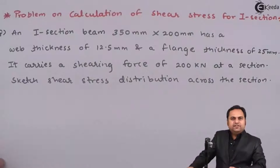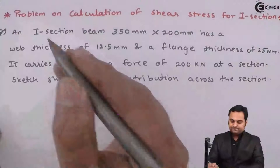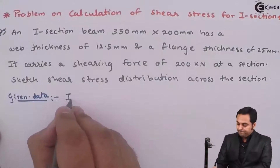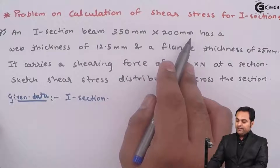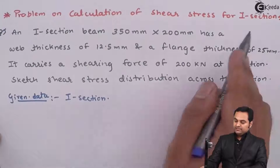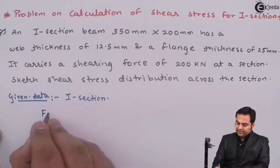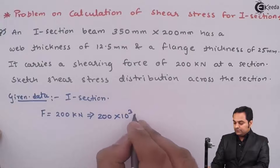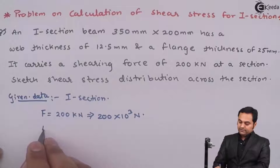In this video we will see a problem on calculation of shear stress for an I-section. The I-section beam is 350 mm × 200 mm, has a web thickness of 12.5 mm and flange thickness of 25 mm. It carries a shearing force F of 200 kN, that is 200 × 10³ Newton.